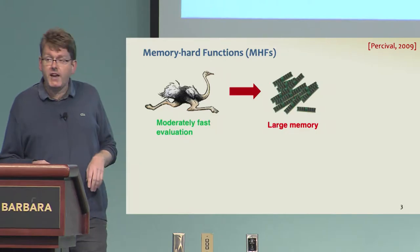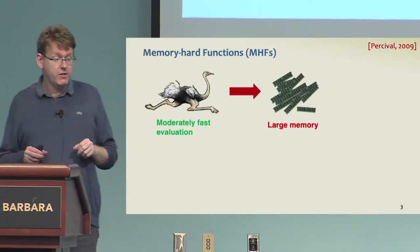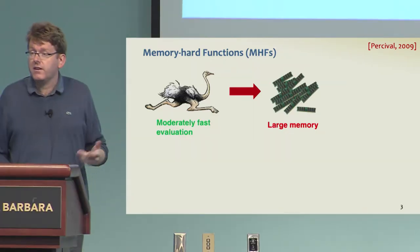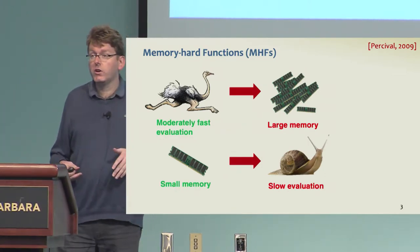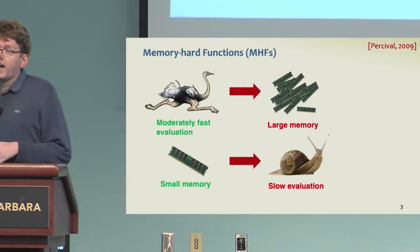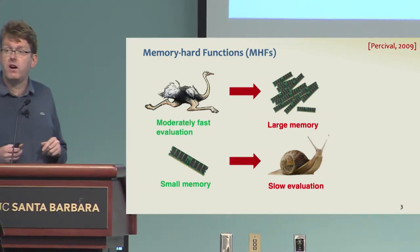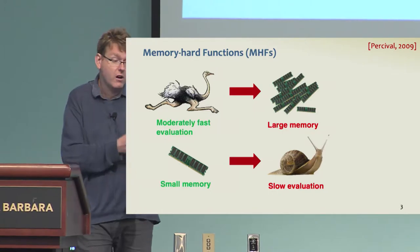What I mean by that is that moderately fast evaluation requires large memory, whereas with small memory, the evaluation should be slow. This should imply a high area time cost, for example in hardware, which in turn implies a high dollar cost for fabrication of the hardware.